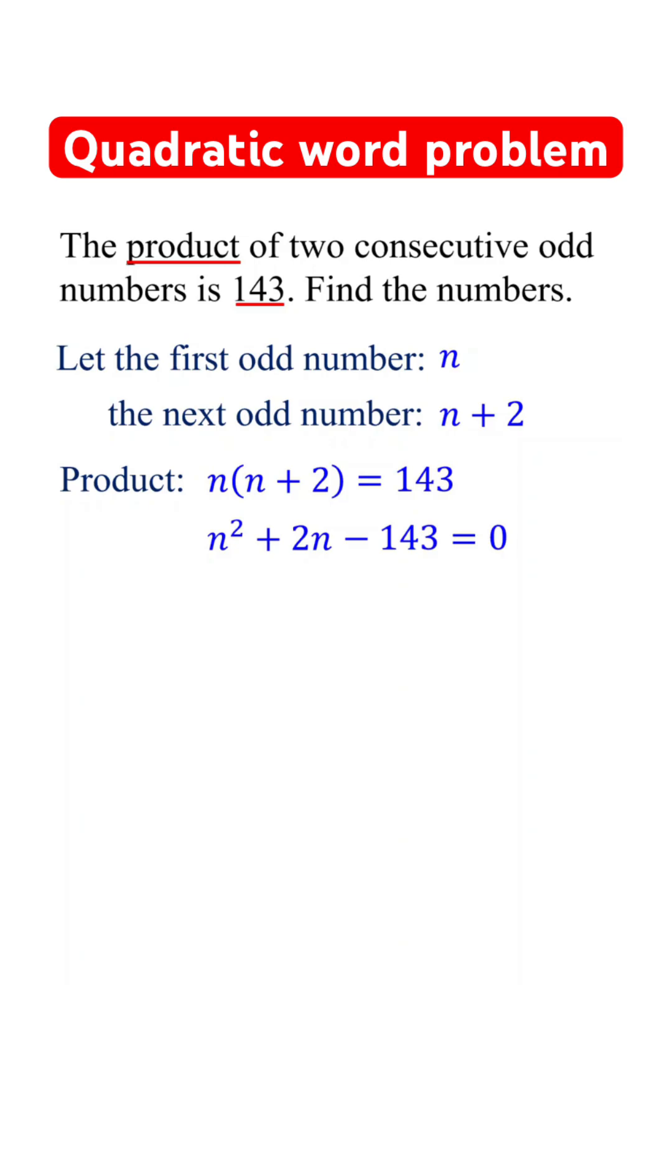Then, solve this quadratic equation. When you factor it, it becomes n minus 11 times n plus 13 equals 0.